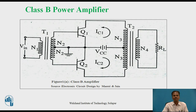So current flows through the upper half part of the primary of transformer T2, and voltage is produced across the upper half part of transformer T2's primary. In the negative half cycle of the input AC voltage signal, transistor Q2 conducts while transistor Q1 is in cut-off. Current flows through the lower half part of transformer T2's primary. Due to transformer action, the output voltage and current is provided to load RL, connected to the secondary of transformer T2.